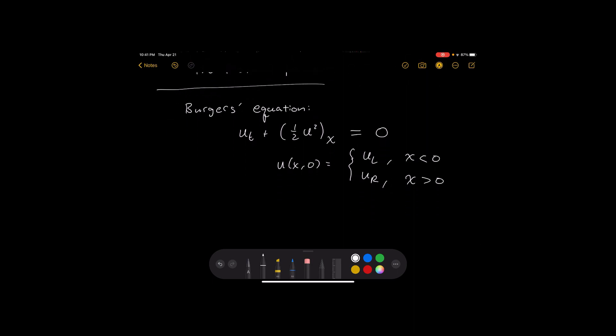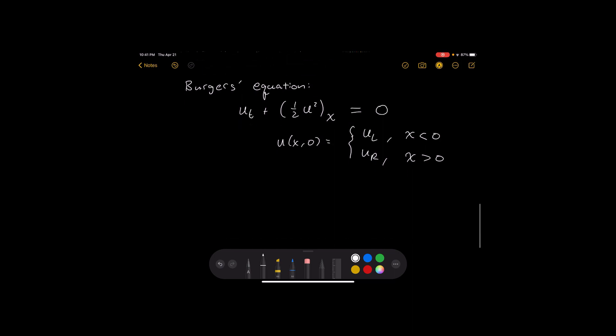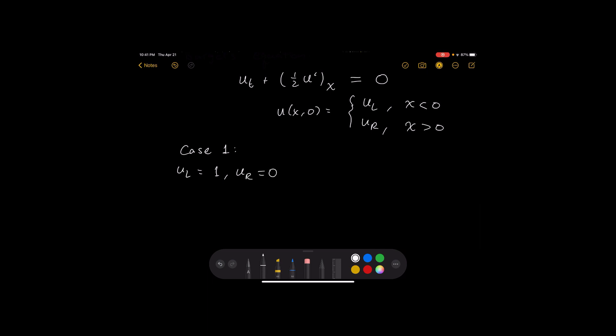Now we're going to look at two cases. Okay, so let's just start with case one. Let's say that u_left is equal to one and u_right is equal to zero. We're also going to have a case two and we're going to flip it. We're going to say that u_left is zero and u_right is one.